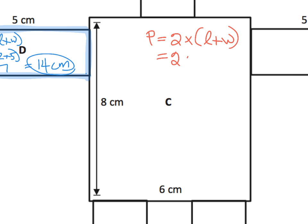So that's going to be 2 times, now the length is 8, and the width is 6. The length is 8, and the width is 6. So when we add those guys together, you're going to get 2 times 14, which is equal to 28.